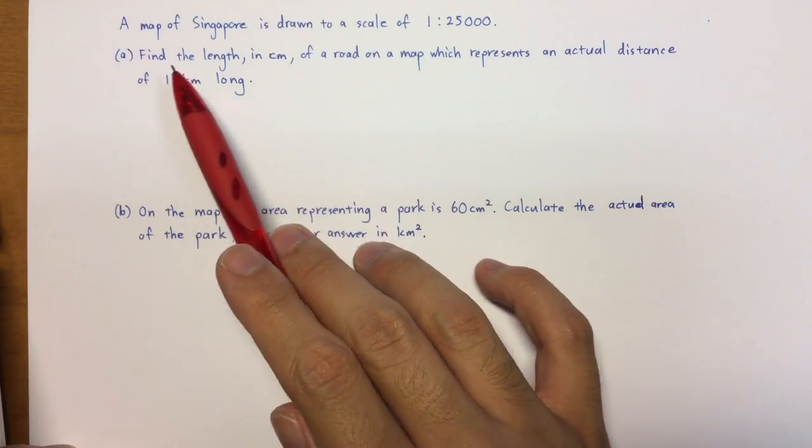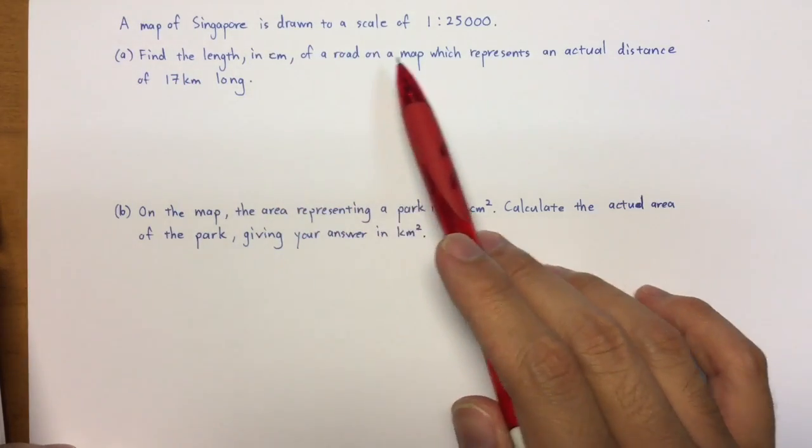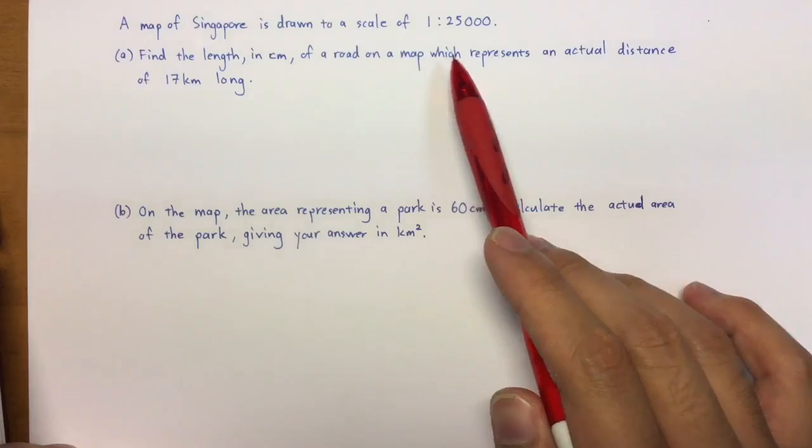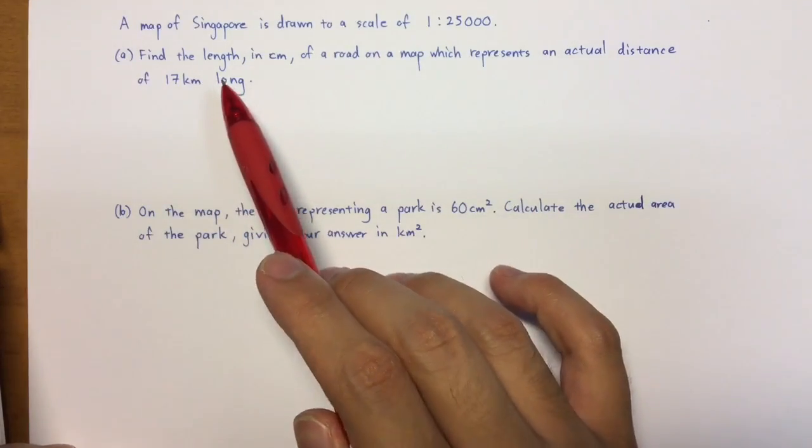And then in part A, they ask, find the length in centimeters of a road on the map, which represents an actual distance of 17 km long.